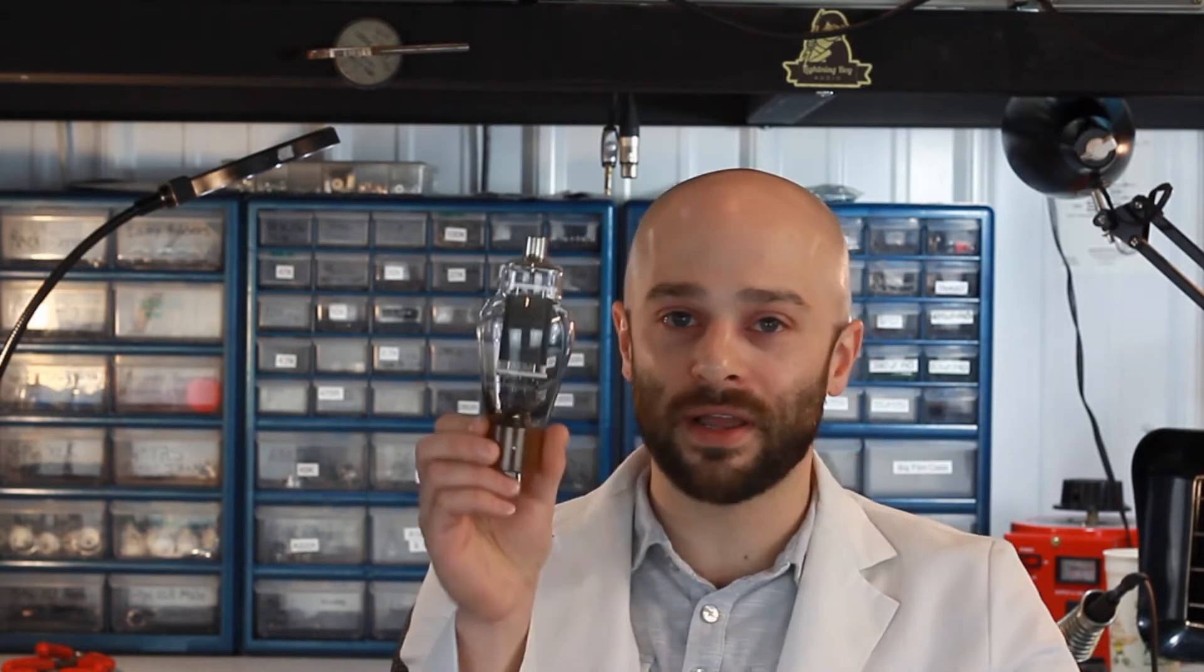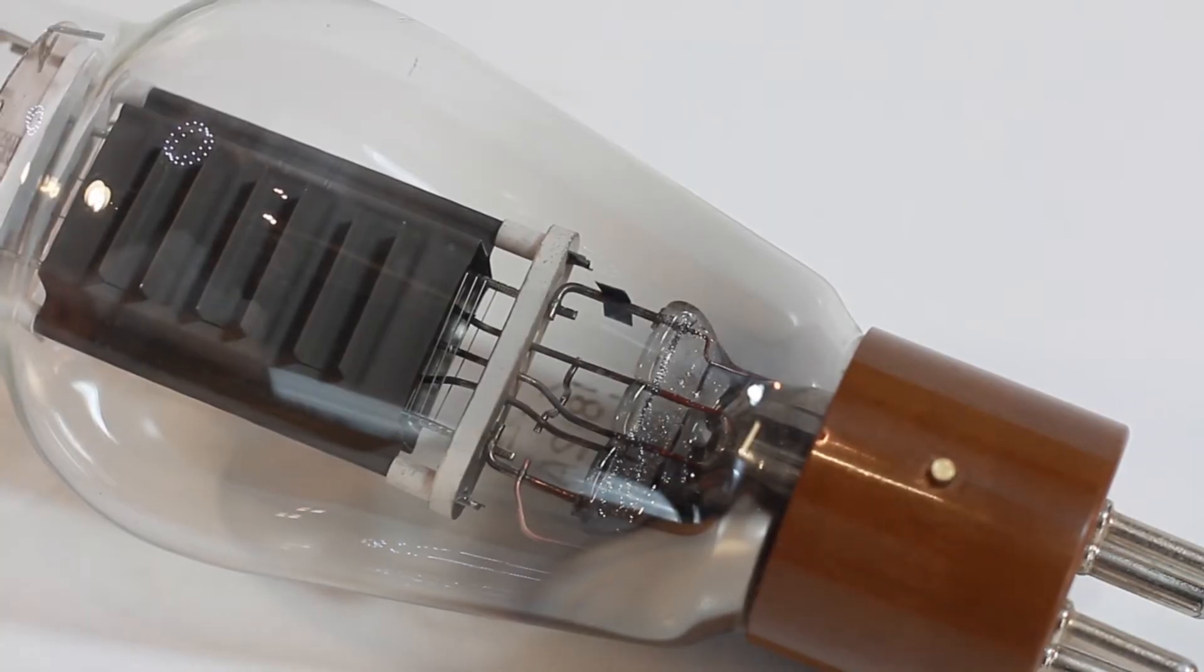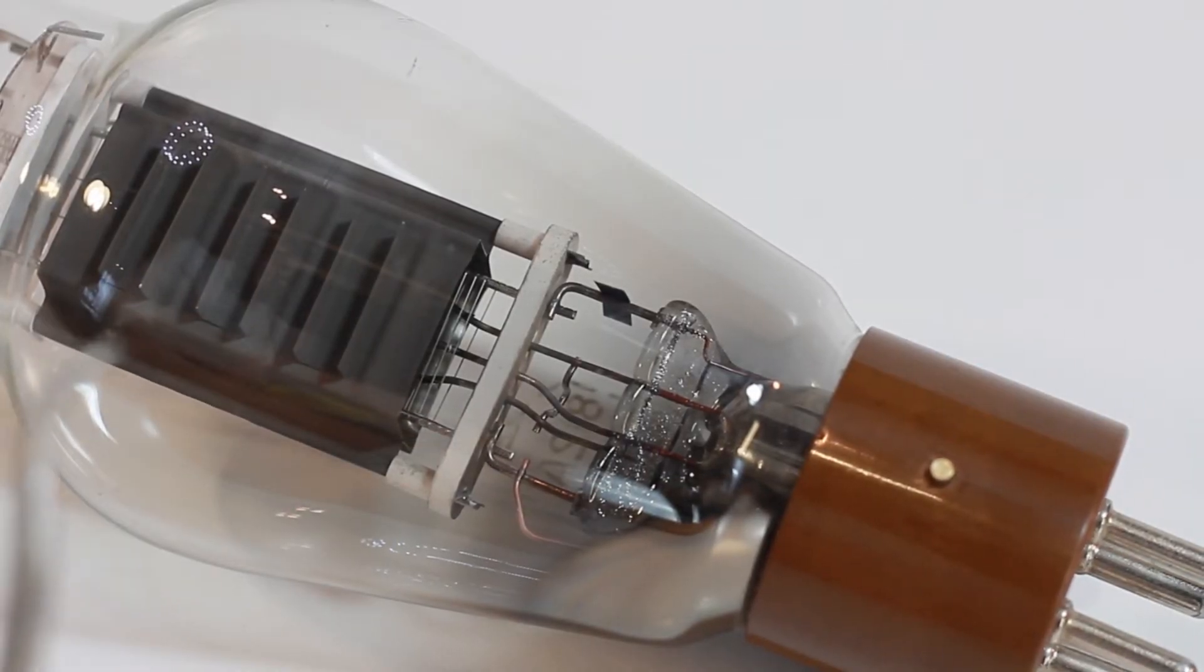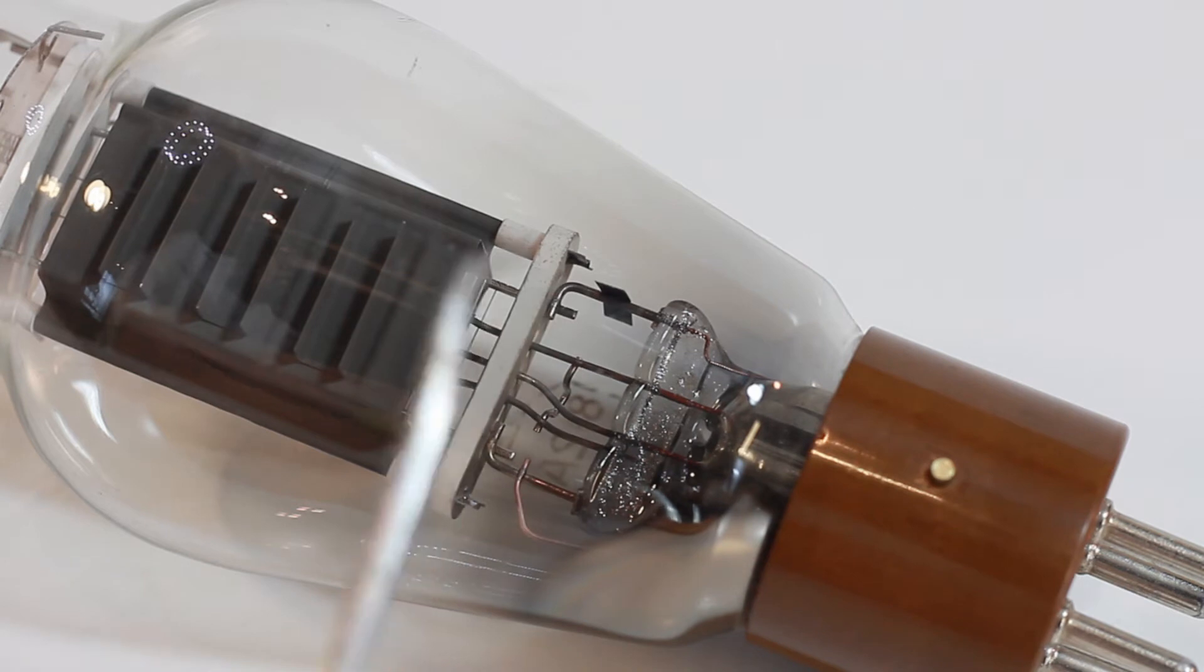This particular video is tackling the topic of what causes tubes to become microphonic. I have a large tube right here so we can see what the internal components look like. You have your components all held together by little wires that are spot welded together. It is these spot welds that can break over time as the weak link.